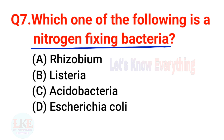Question 7: Which one of the following is a nitrogen-fixing bacteria? A) Rhizobium, B) Listeria, C) Acidobacteria, D) Escherichia coli. The right answer is option A, Rhizobium.